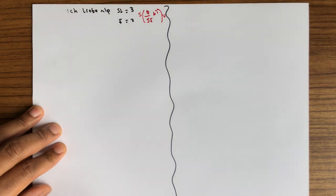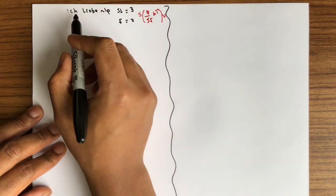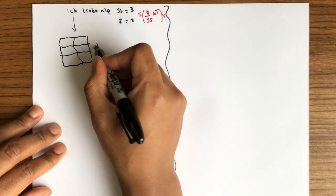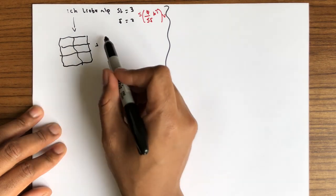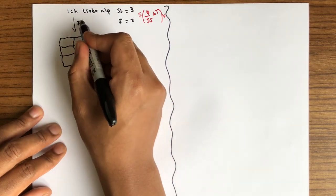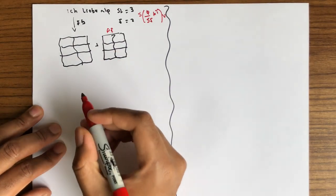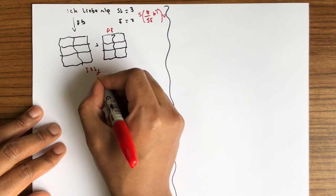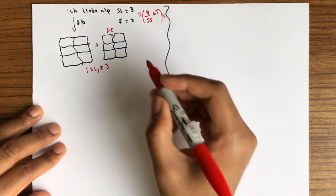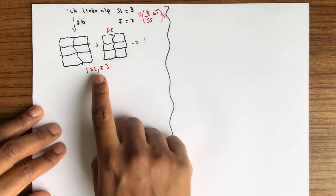This input sentence goes into the embedded layer first. The output of the embedded layer is then added with the positional encoding. Both the embedded layer output and the positional encoding output have a dimension of sl by e — sequence length by embedding size. We have 3 words here, so the sequence length is 3.